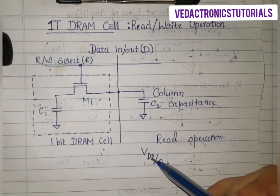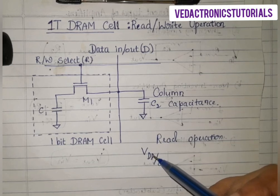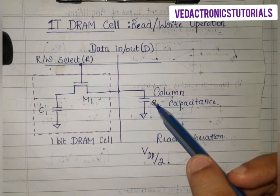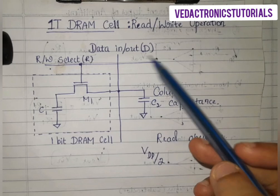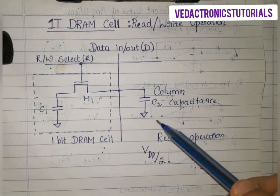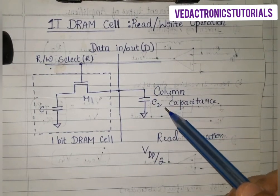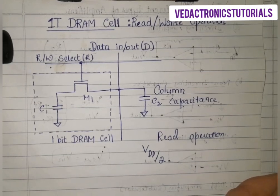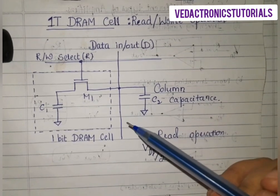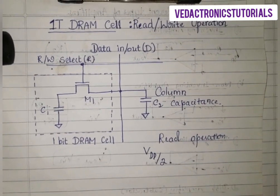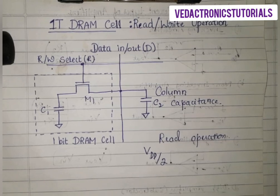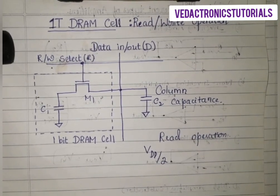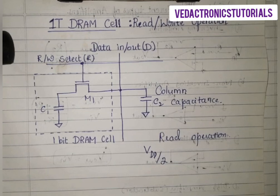If the stored bit is 0, the resulting voltage after charge sharing will be less than VDD/2, hence interpreted by the sense amplifier as logic 0. We should note that the charge sharing inevitably destroys the stored charge on C1. Hence, we also have to perform a data refresh every time we perform a data read operation.